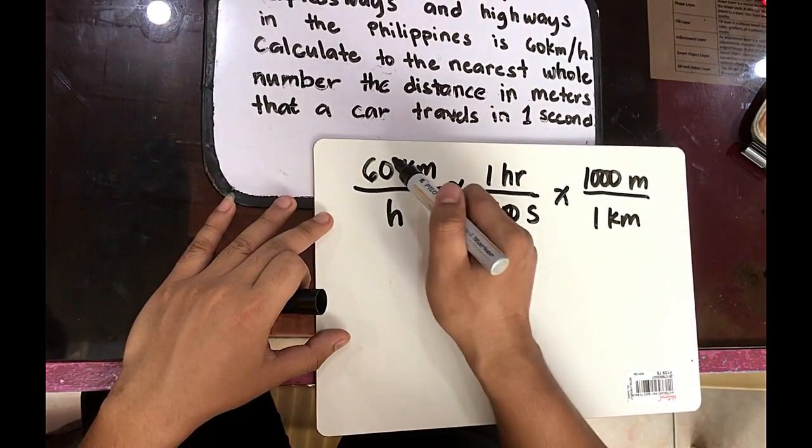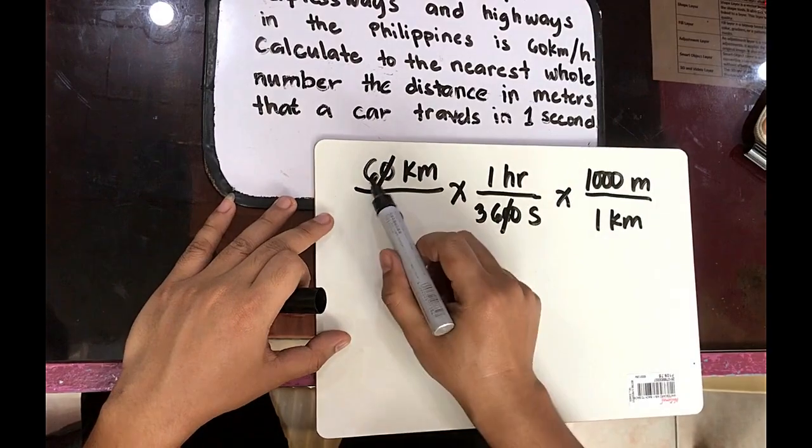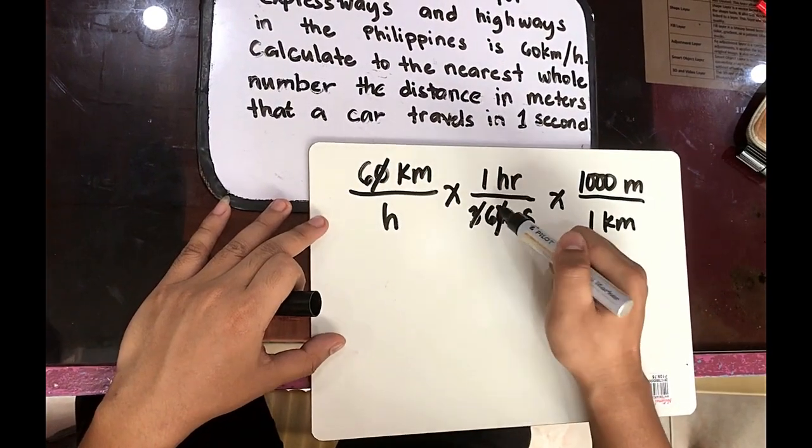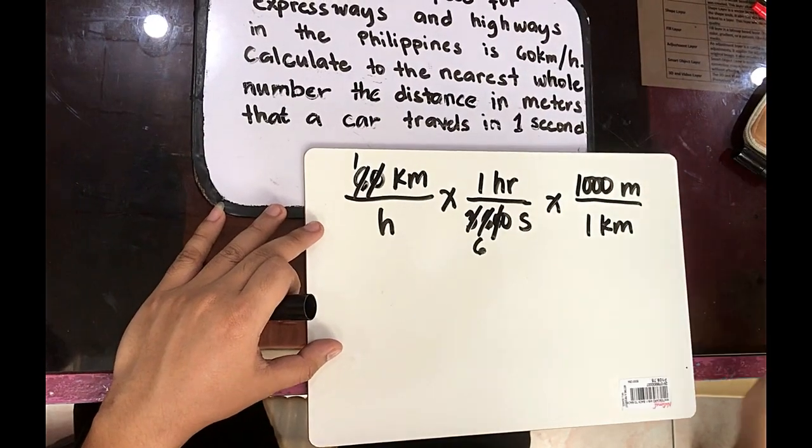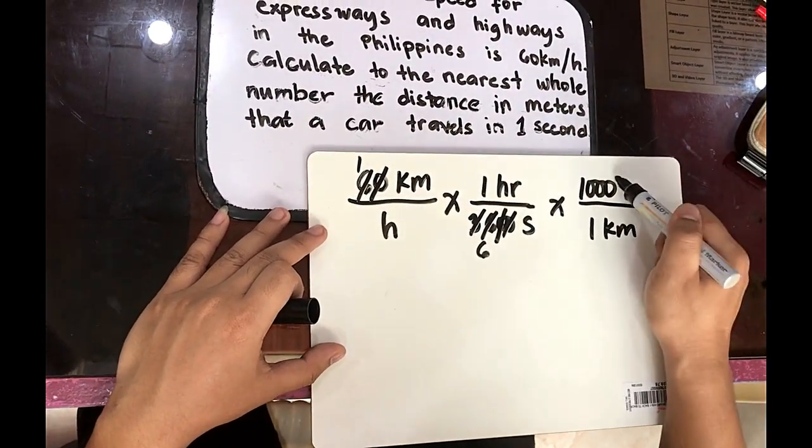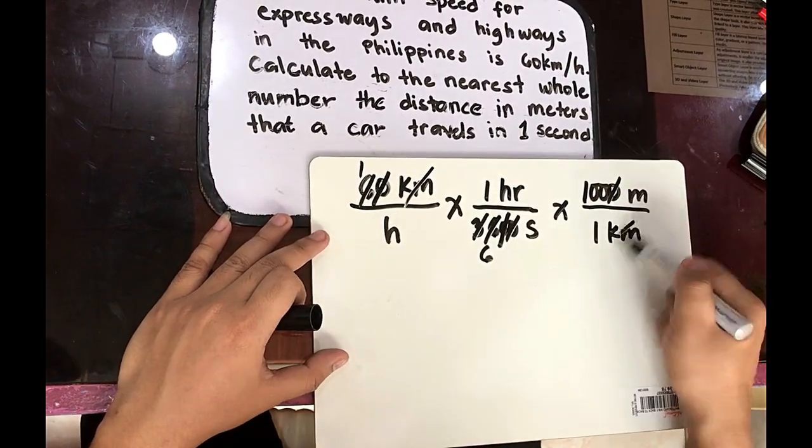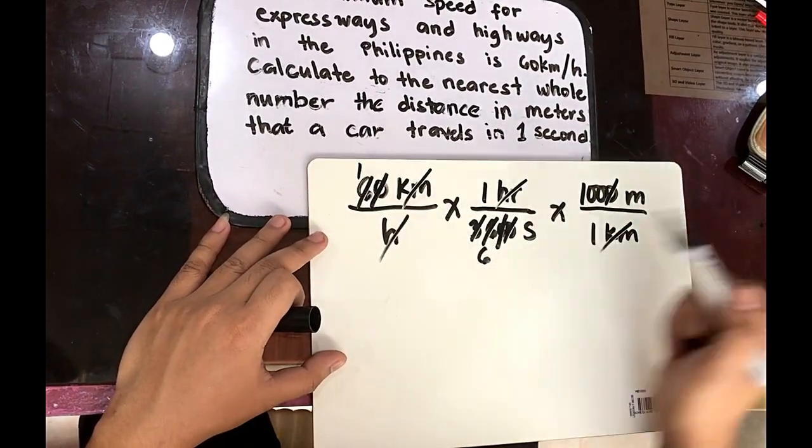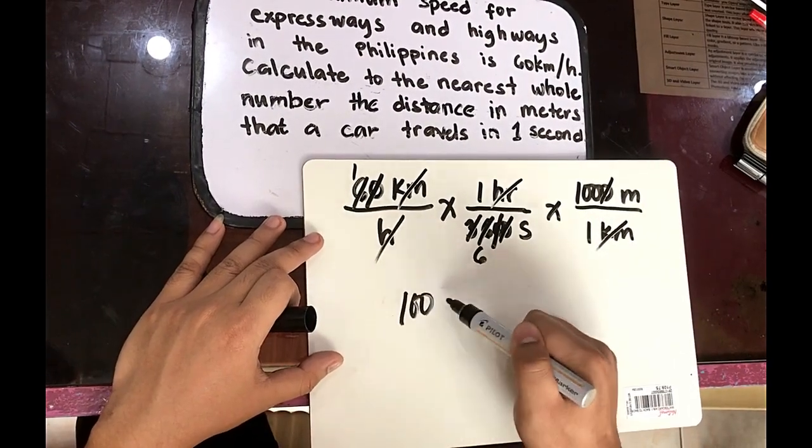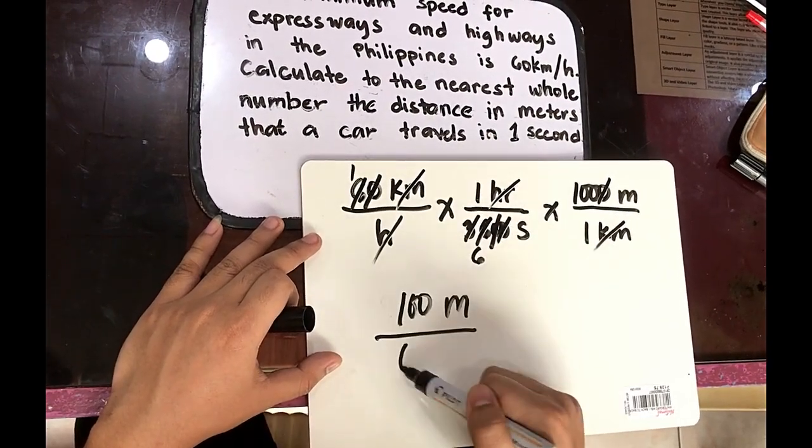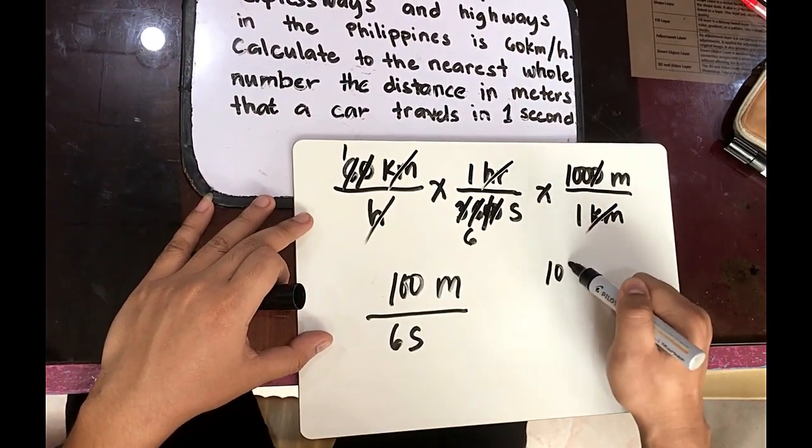Let us cancel. We have 1, 0 here. So cancel 1, 0 at the denominator. 6 and 36, cancel. This will be 1 and this will be 6. So cancel kilometers. Cancel hours. So we have 100 meters over 6 seconds. So divide. 100 divided by 6.